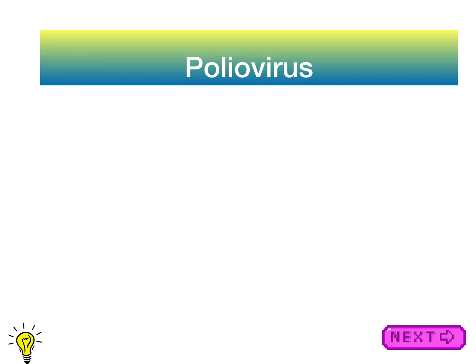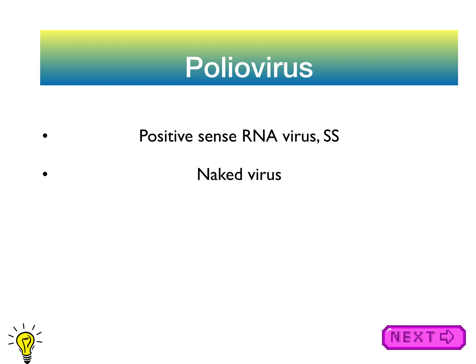Poliovirus is a positive-sense, single-stranded RNA virus. It's acid-stable — it has to be acid-stable if it's going to be fecally-orally transmitted, because that means it will be able to withstand the high acidity of the GI tract.